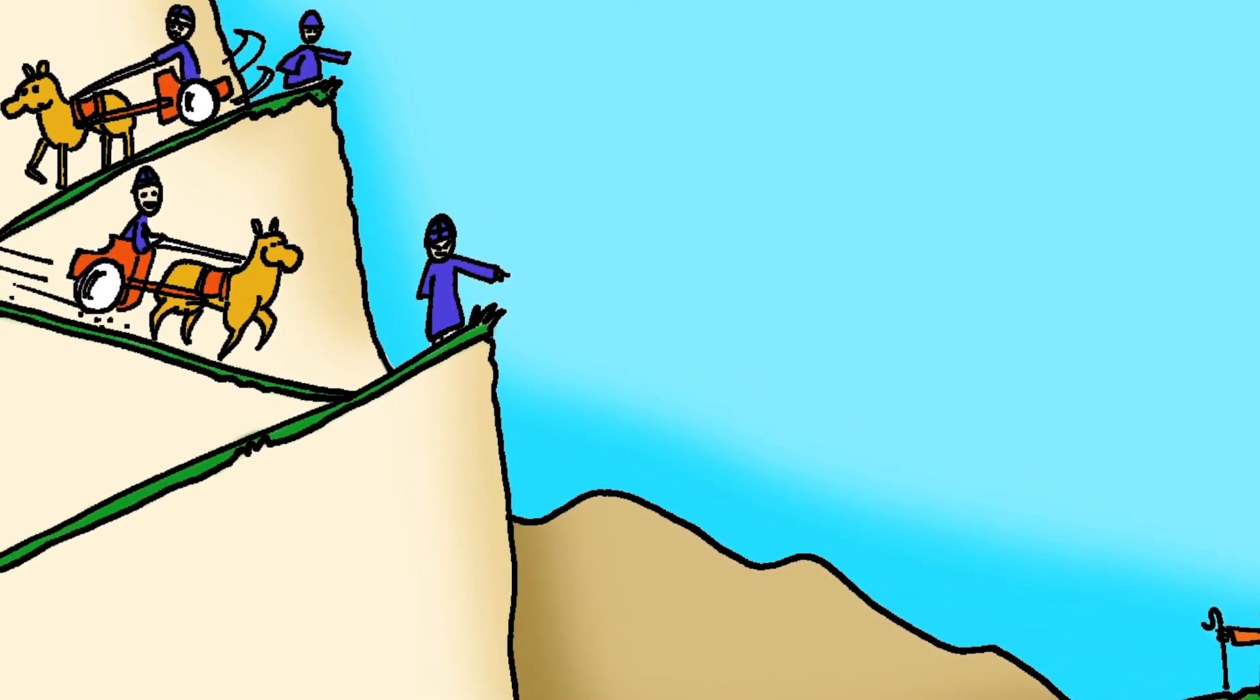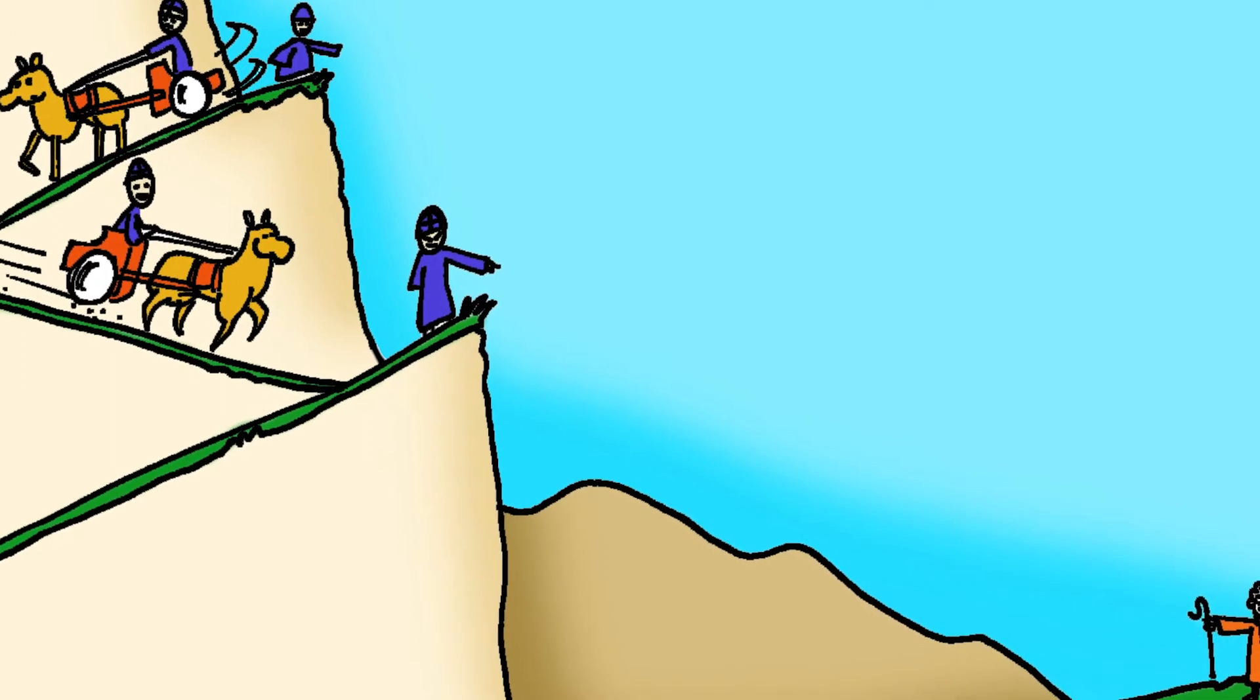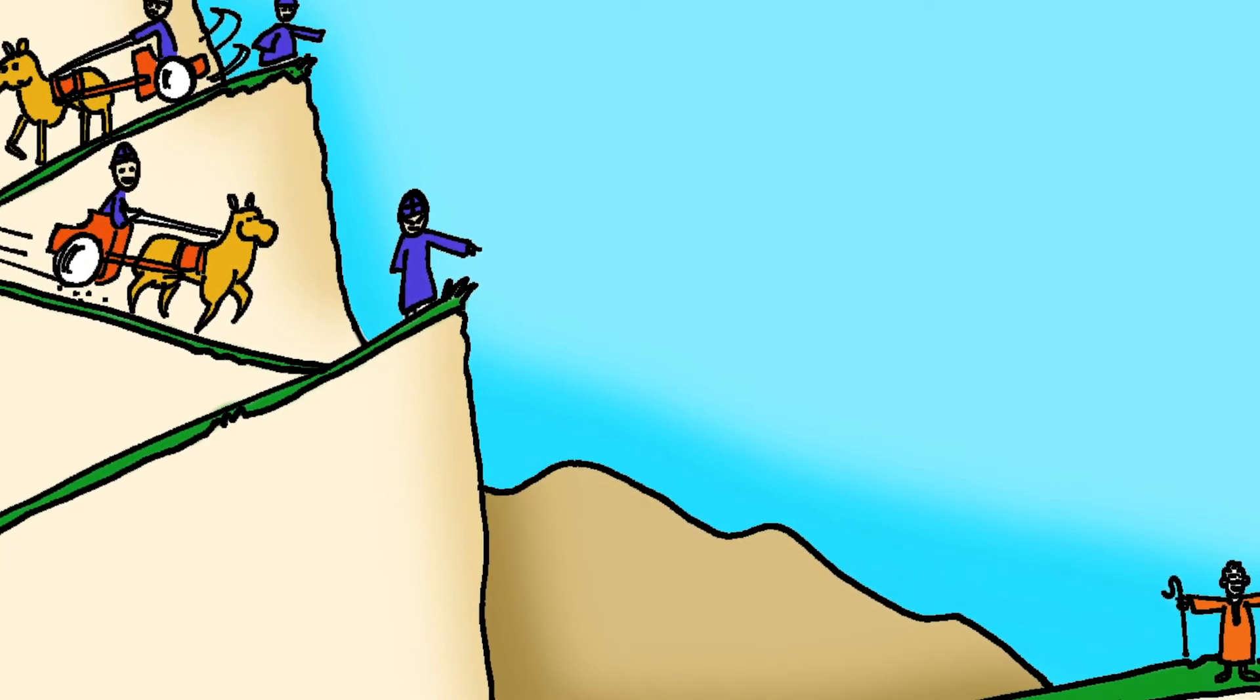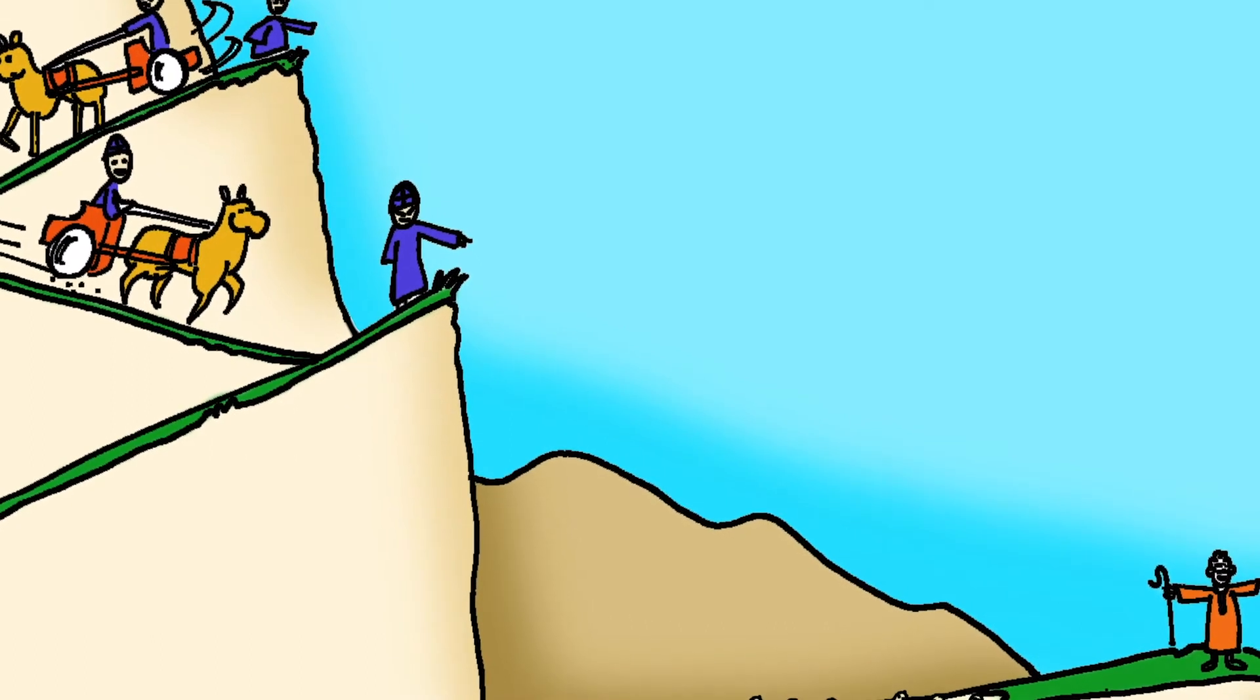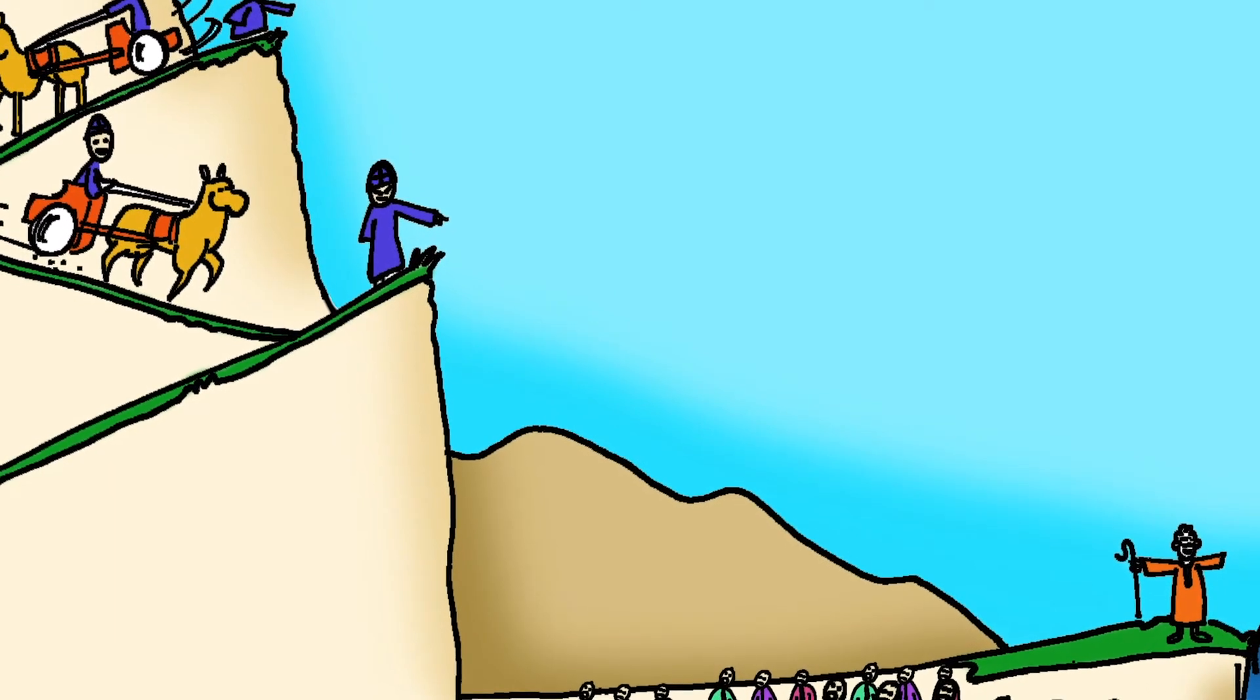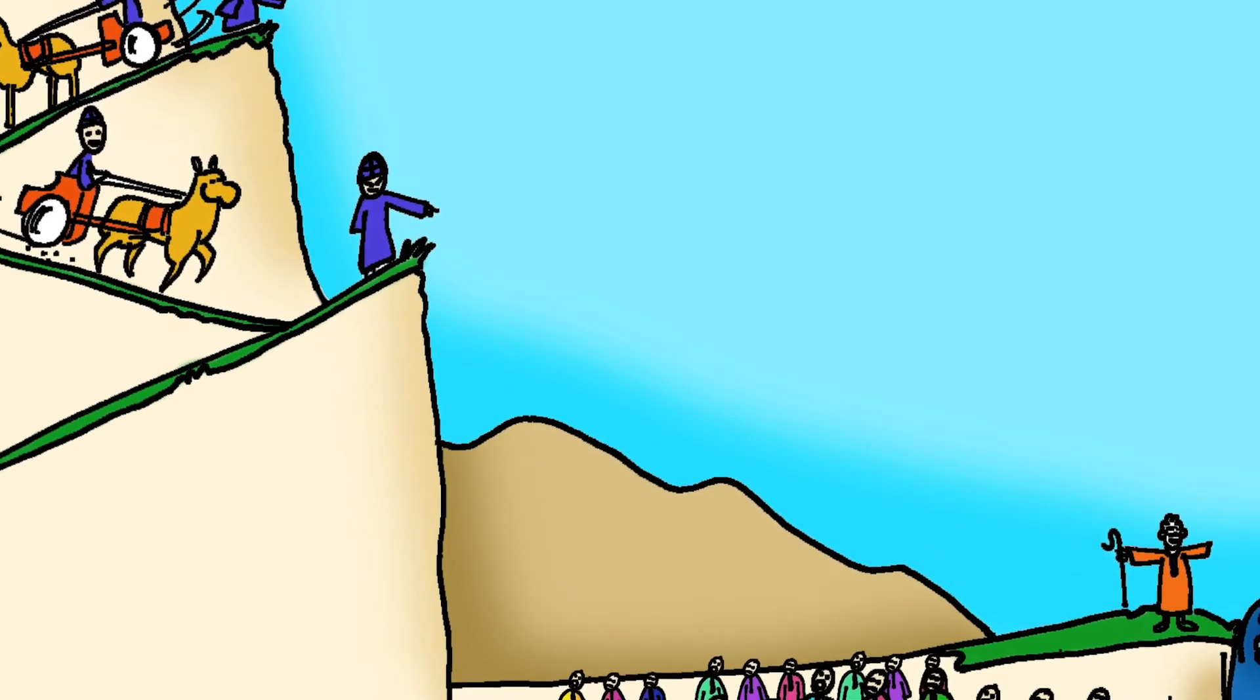It was only when the Israelites saw a cloud of dust in the distance did they realize the king was after them. They tried to move faster, but there were so many of them. The king and his army was getting closer and closer.